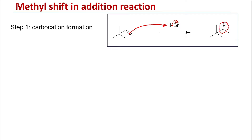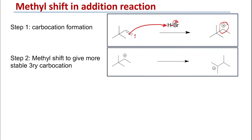According to Markovnikov's rule, the hydrogen will be added to the carbon that has more hydrogen atoms — carbon number one — and the carbocation will be generated on carbon number two because this is more stable. But then this secondary carbocation has adjacent to it a quaternary carbon. This is a fast step where a methyl shift will occur: a methyl group moves from the quaternary carbon to the secondary carbocation, generating a tertiary carbocation on that carbon, which is more stable.